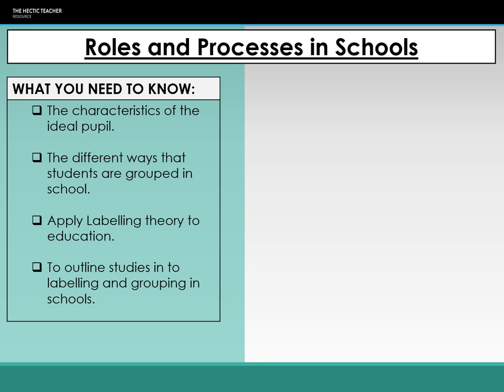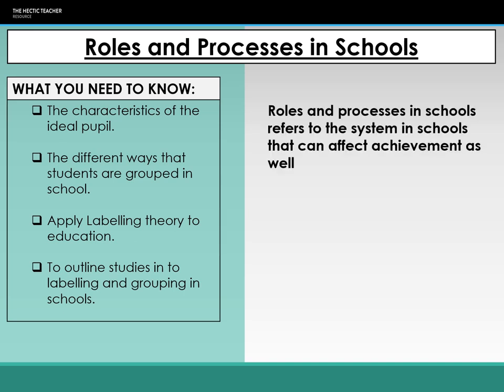In this lecture, I'm going to talk to you about roles and processes in schools. What that means is it's about the systems in the school - what happens within schools that can affect a student's achievement as well as their experience of education as a whole. We're going to talk about the ideal pupil, labelling theory, which you'll remember from doing perspectives, and groupings in schools.